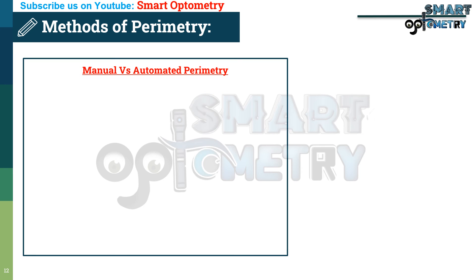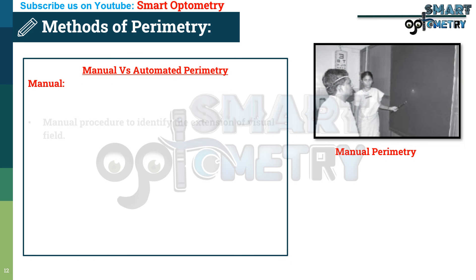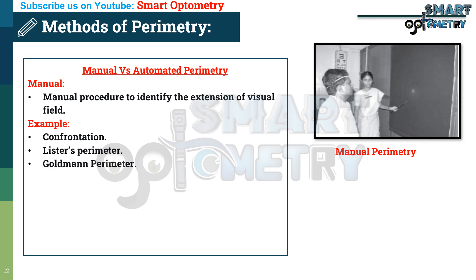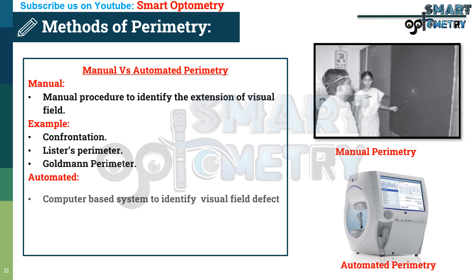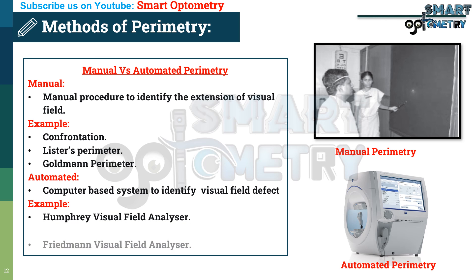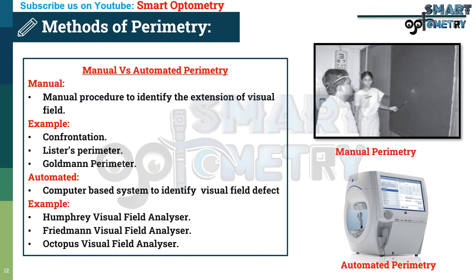Method 3 — Manual vs. Automated perimetry: Manual perimetry is a manual procedure to identify the extension of visual field. Examples include confrontation method, Lister's perimeter, and Goldmann perimeter. Automated perimetry is a computer-based system to identify visual field defects. Examples include Humphrey visual field analyzer, Friedmann visual field analyzer, and Octopus visual field analyzer.